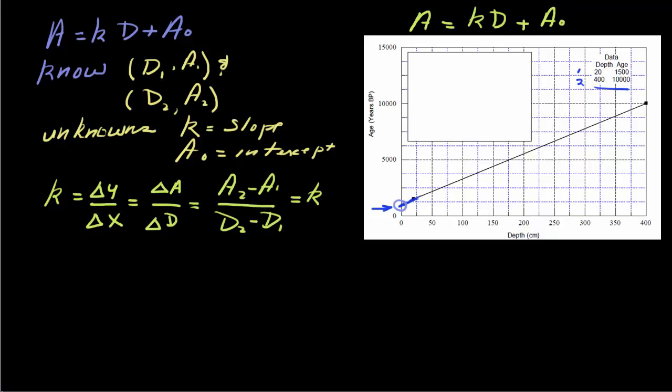Once we figure out what the slope is, we come back to our equation. We have A is equal to KD plus A0, we now really have only one unknown, so let's solve for it. Let's write down A0.